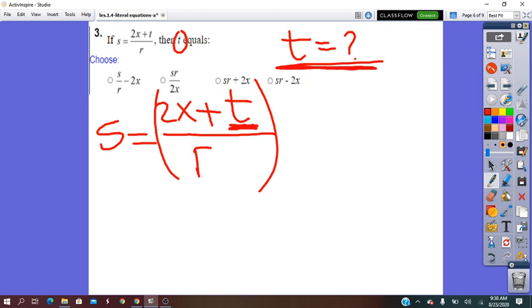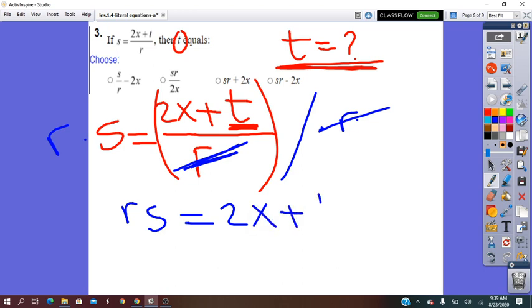So if we have a fraction, we do not keep working with fractions, we said before. Divided by r, the reciprocal will be times r. We do it on both sides of the equals. It will be rs equals. When we do the times, this r denominator will go, and it will be left 2x minus t.